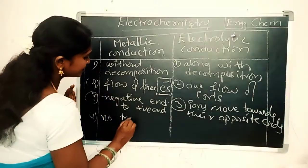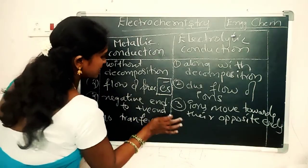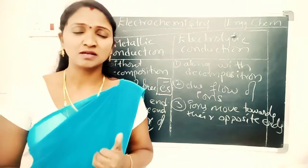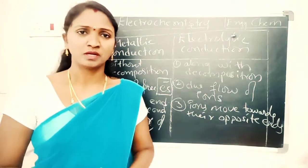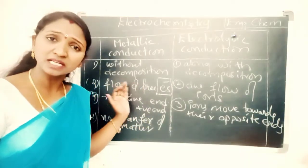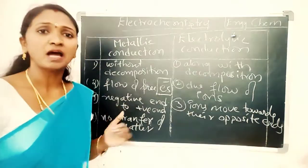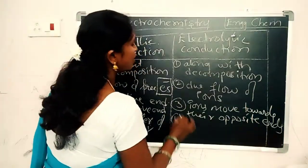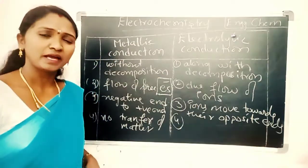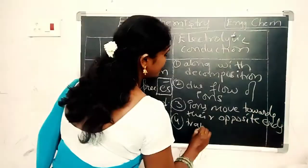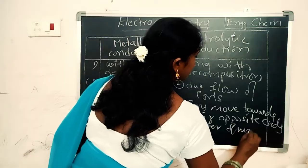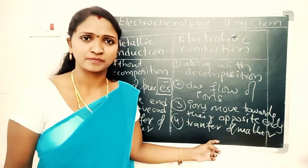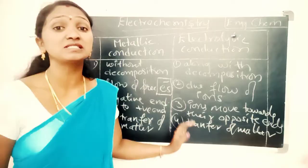Fourth difference: in metallic conduction, there is no transfer of matter — no transfer of atoms or ions, only electron flow occurs. Whereas in electrolytic conduction, there is a transfer of matter, including movement and flow of ions.